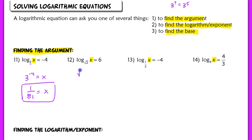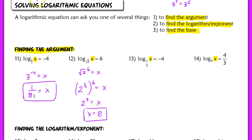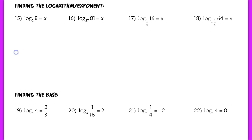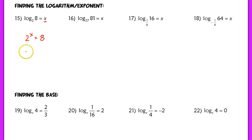In the next example, the square root of 2 raised to the 6th power equals x. I rewrite that as 2 to the 1/2 power raised to the 6th, which gives 2 to the 3rd, so x equals 8. Moving on to the second type: finding the logarithm or exponent. We switch to exponential form — base is 2, so 2 raised to the x power equals 8. Equating bases: 2 to the x equals 2 to the 3rd, so x equals 3.